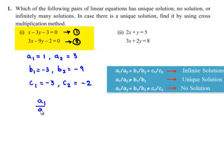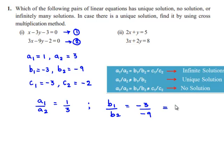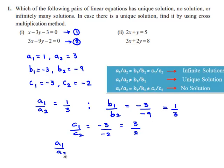So, a1/a2 = 1/3, and b1/b2 = -3/-3 which is 1, and c1/c2 = -3/-2 which is 3/2. If we observe, a1/a2 = b1/b2, which is not equal to c1/c2.